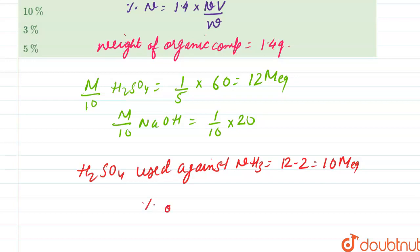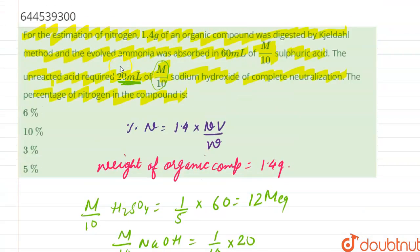So the percentage of N will be equal to 1.4 into 10 divided by 1.4 which is equals to 10%. So our answer is 10% which is option number B.